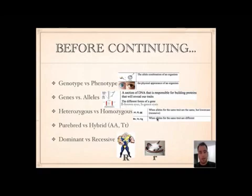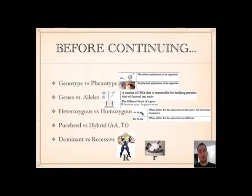Heterozygous is when alleles for the same trait are different — big R, little R; big T, little T; big G, little G. In other words, you have a capital and a lowercase: dominant and recessive. When they're both the same — like both lowercase or both uppercase — those are called homozygous; they're the same type. Then you have purebred versus hybrid: purebred is the same as homozygous, and hybrid is heterozygous.